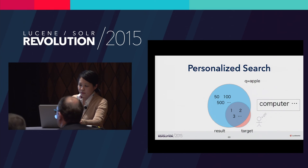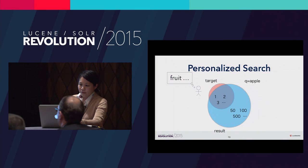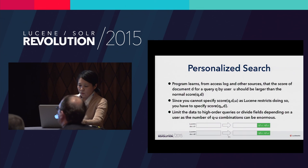Personalized search means optimizing the search ranking for a query on a searcher-by-searcher basis. When you search for the word 'apple', for example, the target sets are different for users looking for Apple as in the computer company and users looking for apple as in the fruit. So you have to optimize ranking searcher by searcher. The program learns from access logs that the score of document D should be larger than Lucene normally calculates for query Q by user U. Since you cannot pass user U to Lucene's score function, you combine query Q and user U to create a personalized query. This task can be realized by keyword attachment as well.